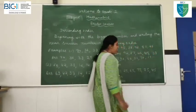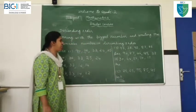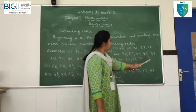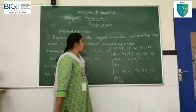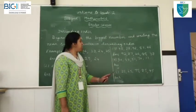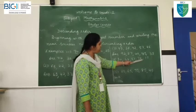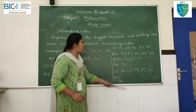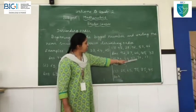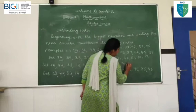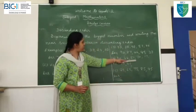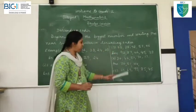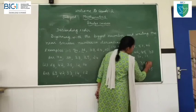Did you understand? Now, let me go to the fourth example. In this: 30, 44, 51, 70. Which number should I start with? From the big number to the smallest number. What is the biggest number? 70. After 70, which number comes — smaller than 70? 51. Next smaller number is 44. Next smaller number is 30.